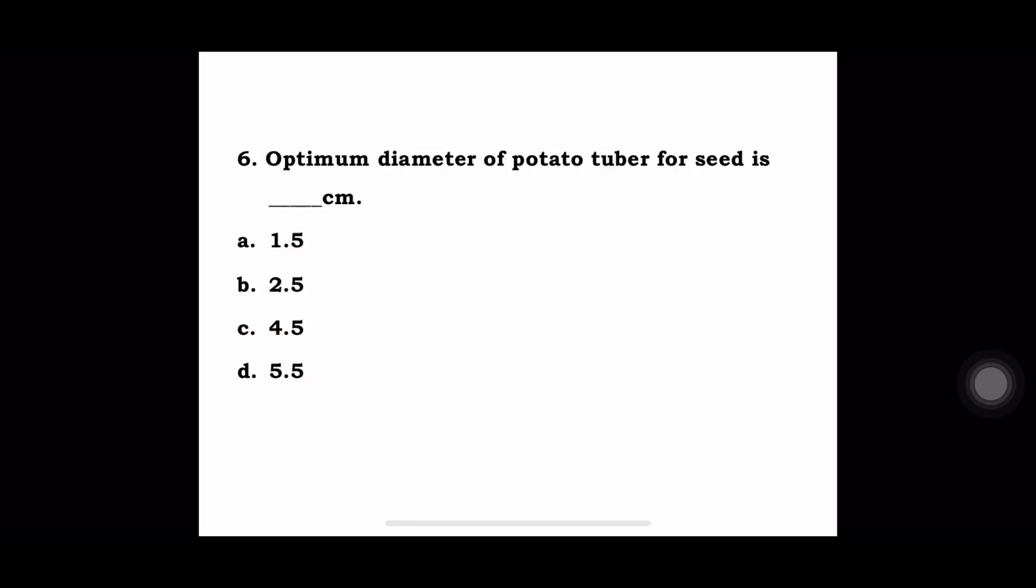Sixth question: optimum diameter of potato tuber for seed is dash centimeters: a) 1.5, b) 2.5, c) 4.5, d) 5.5. The answer is 2.5 cm. At least the diameter of potato tuber used for seed purpose should be of 2.5 cm.